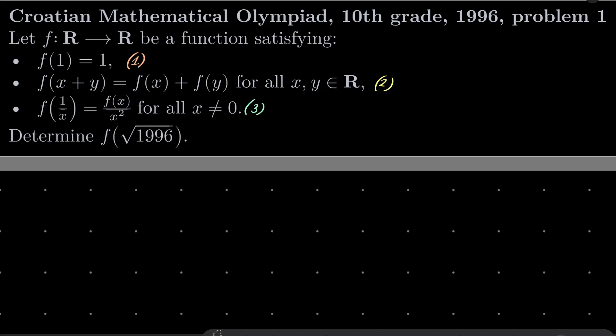Hello friends, in this video I'd like to solve the following problem from the Croatian Mathematical Olympiad for 10th graders 1996, problem number 1. Let f be a real function satisfying the following three conditions: f(1) = 1, f(x+y) = f(x) + f(y), so Cauchy functional equation is satisfied, and moreover f(1/x) = f(x)/x² for all nonzero x. We wish to find f(√1996).